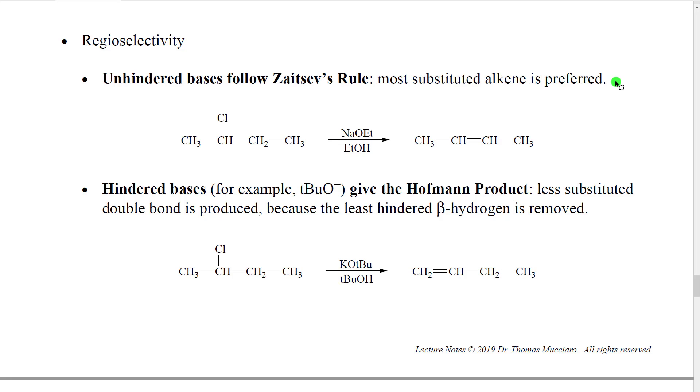However, it turns out that if you choose the beta carbon that has the most carbon groups attached, the most substituted beta carbon, that will give you the most substituted alkene. So it can be restated as the most substituted beta carbon is preferred.